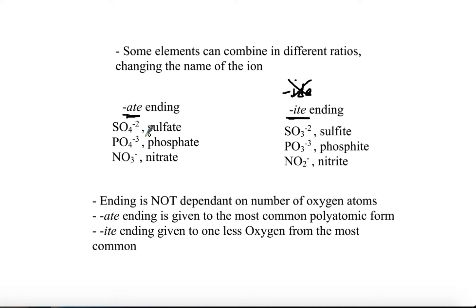Sulfate, when it has one less oxygen, is called sulfite, similar to phosphate, one less oxygen phosphite, and nitrate, one less oxygen nitrite. So by having one less oxygen, these polyatomic anions, their ending changes from an -ate to an -ite. These endings can actually help distinguish these polyatomic ions from their monatomic versions.